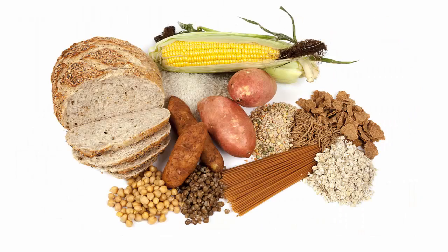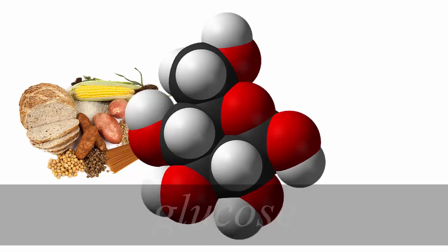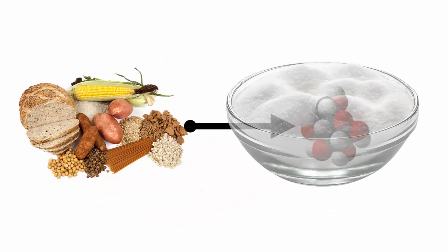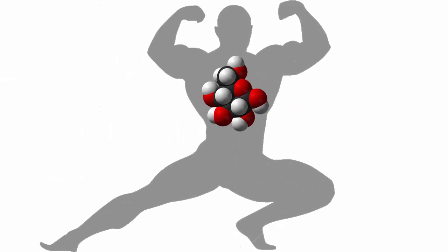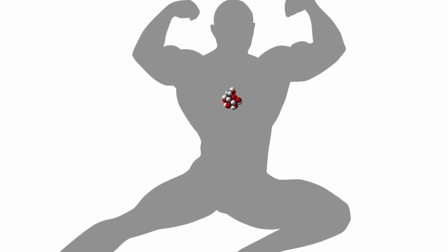When you consume carbohydrate food, they are converted to glucose, which is a type of sugar in your blood. Glucose is the primary source of energy used by the body. Then your body uses blood glucose to fuel your body for all your physiological functions.